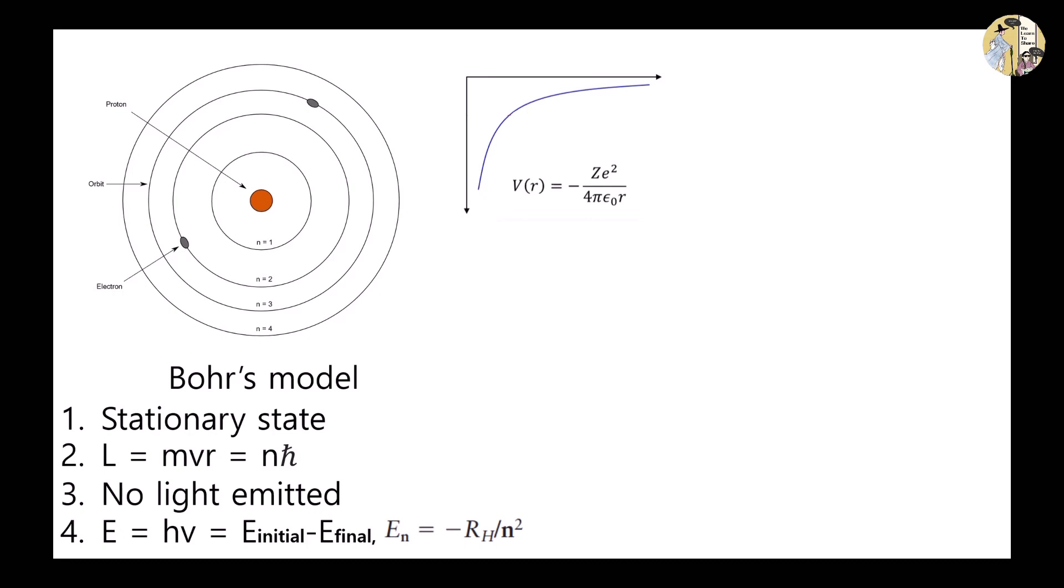Third, when an excited electron releases energy in the form of light, it drops back to a lower energy state or the ground state. The energy released in this process equals the energy difference of the two stationary states.